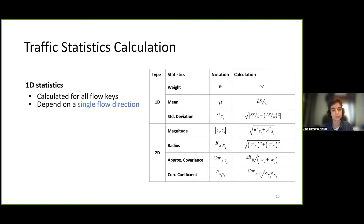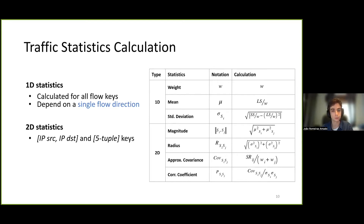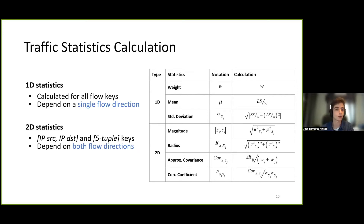The second type, 2D statistics, is calculated only for the IPSource/IPDestination and 5-Tuple keys. These 2D statistics measure two flow directions, as they encompass both inbound and outbound traffic.